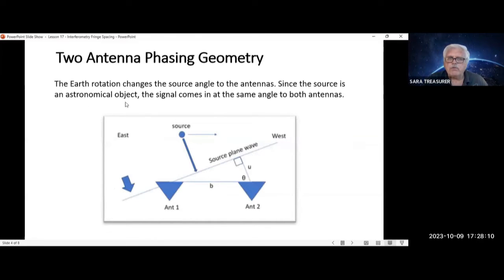During drift scanning, the earth rotates, changes the source angle of the antennas. Since the source is an astronomical unit object, the signal comes in at the same angle to both antennas. The distance between the antennas is B, the angle is theta.